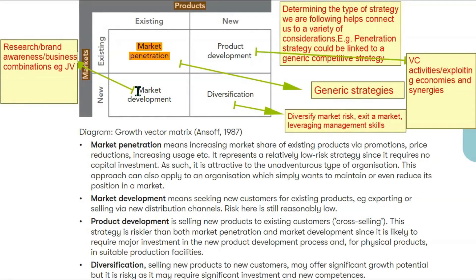What about existing products into a new market? That's called a market development strategy. Things connected to this include research into what the new market is like, brand awareness — both ours and our competitors' — and how we're going to enter that market, for example through a joint venture or by employing an agent who knows how things work there. All of these questions need to be answered, planned for, resources allocated, and people made responsible.